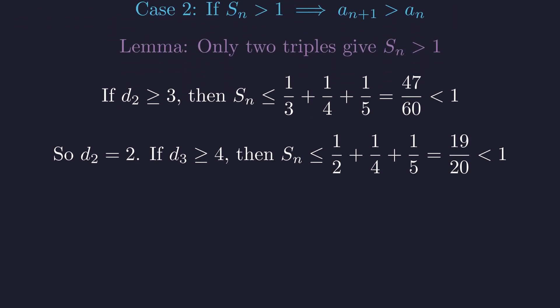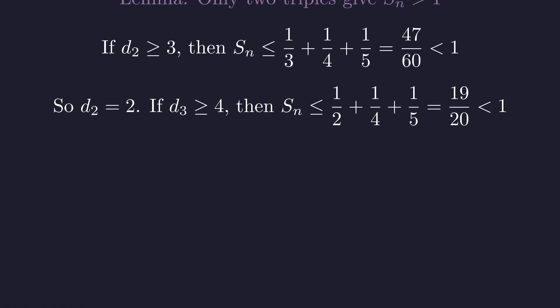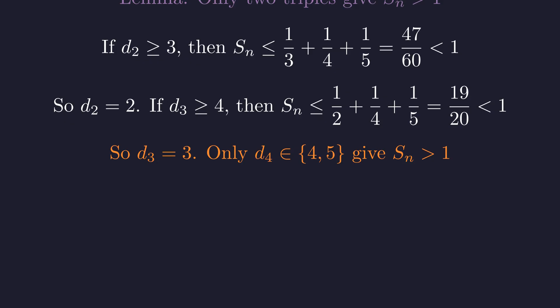This forces d2 to be 2. Now, if d3 is at least 4, S_n is at most 1/2 + 1/4 + 1/5, which is 19/20, also less than 1. So, for growth, we must have d2 equals 2 and d3 equals 3.